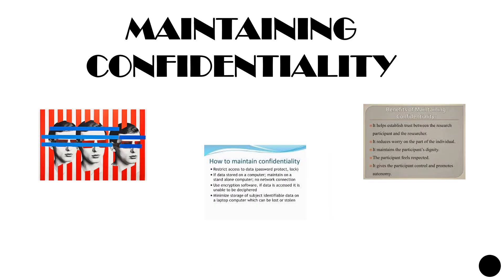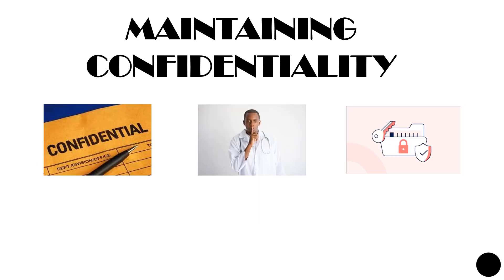Sharing information about a respondent with others for purposes other than research is also unethical. Sometimes you need to identify your study population to put your findings into context; in such a situation, you need to make sure that at least the information provided by the respondents is kept anonymous. It is unethical to identify an individual respondent and the information provided by him or her. Therefore, you need to ensure that after the information has been collected, its source cannot be identified. In certain types of study you might need to visit respondents repeatedly, in which case you must be extra careful that others do not have access to the information. It is unethical to be negligent in not protecting the confidentiality and anonymity of the information gathered. If you are doing research for someone else, you need to make sure that confidentiality is maintained by that party as well.